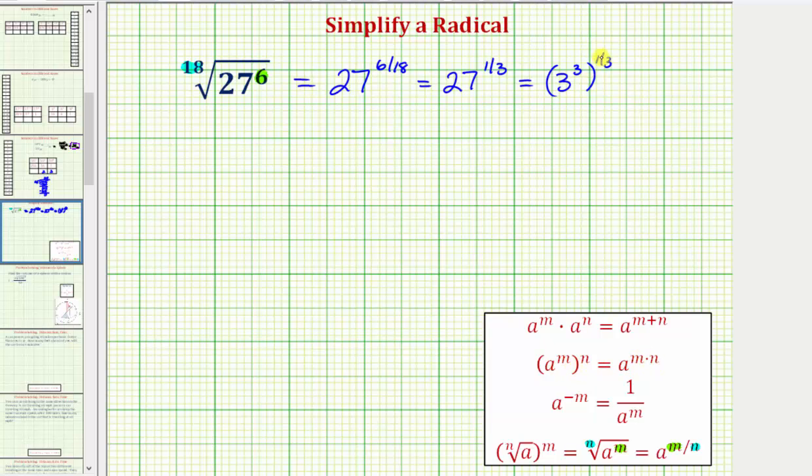And notice how this would give us 3 to the power of 3 times 1/3rd, which equals 1. And remember whenever the exponent is 1, we can leave it off, and therefore this simplifies perfectly to 3.